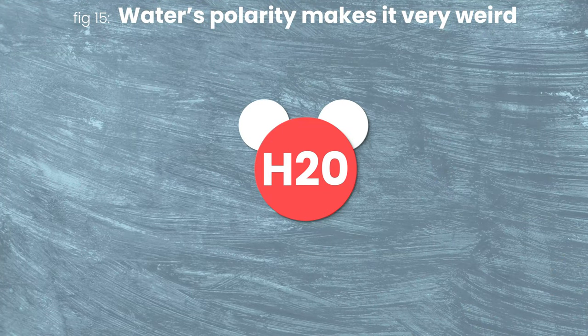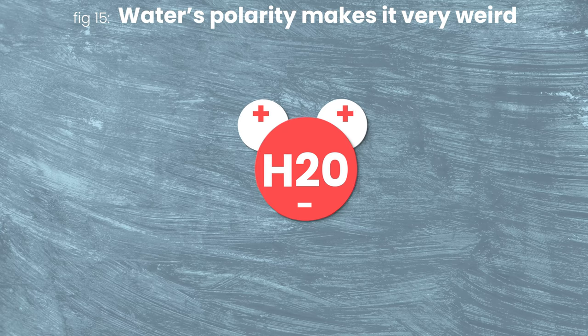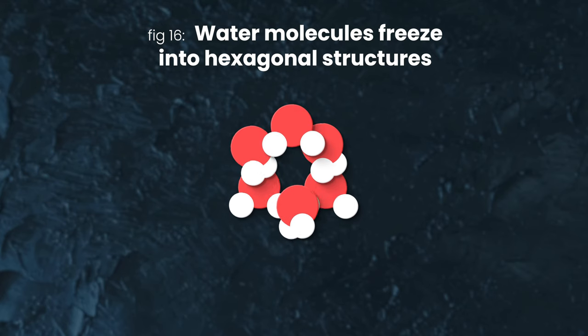Remember, each water molecule is like a tiny little magnet with a positive end and a negative end. Liquid water sticks and unsticks to itself as it moves around all the time. But when water freezes, that becomes permanent in a really specific shape.